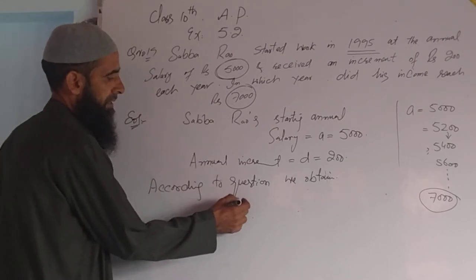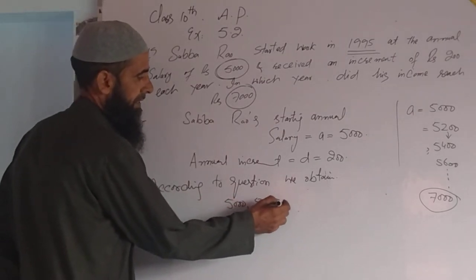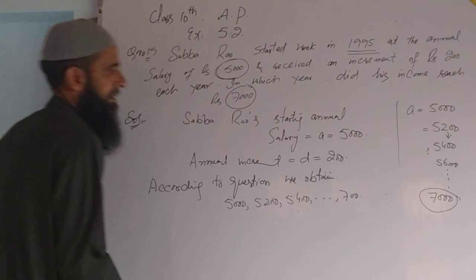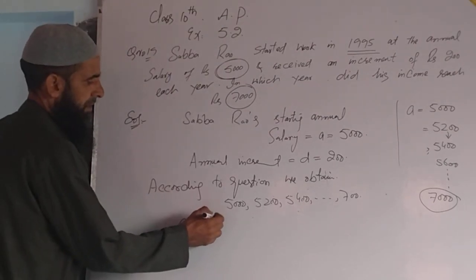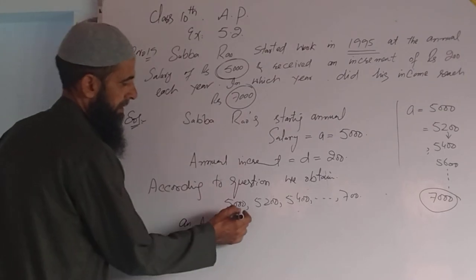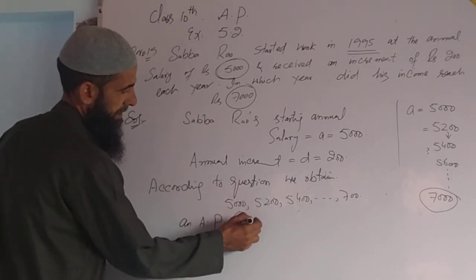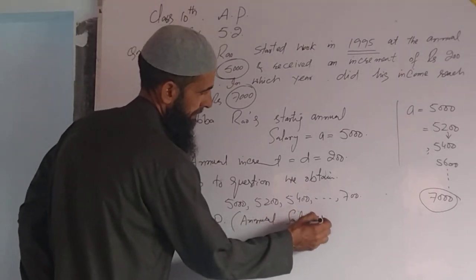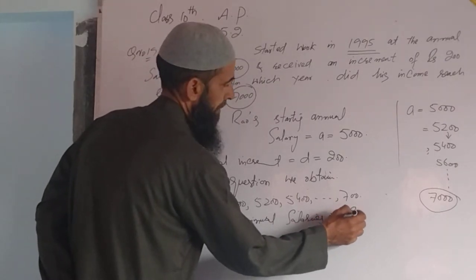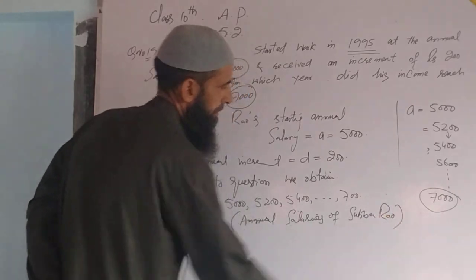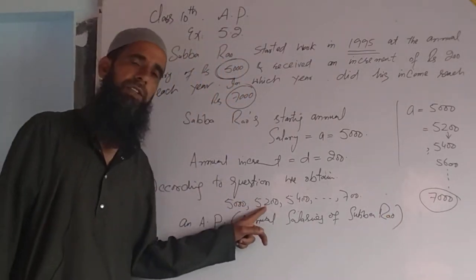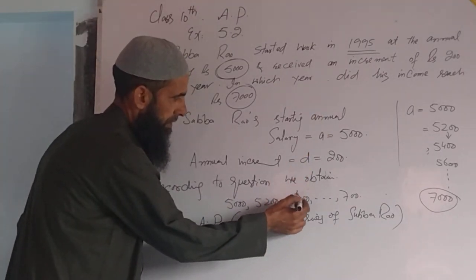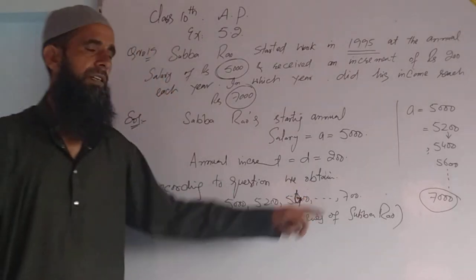According to the question, we require the sequence: 5000, 5200, 5400, and so on, up to 7000. This is the arithmetic progression representing the annual salaries of Sabha Rao for the first year, the second year, the third year, and so on.